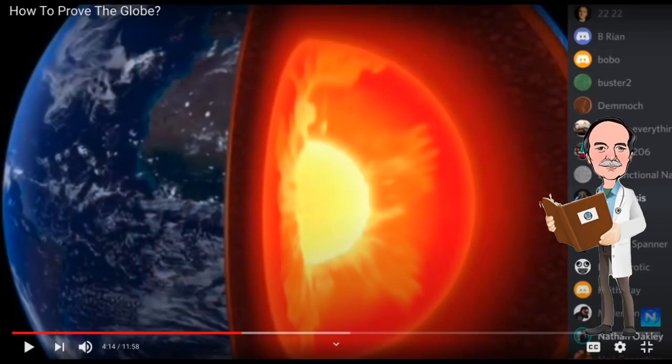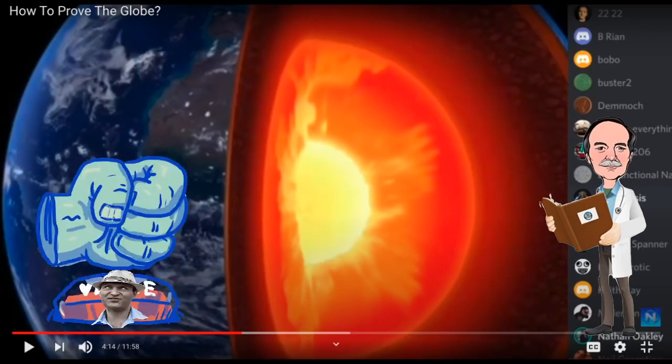Now this goes right along with Nathan's strategy and that is do not make a claim that is subject to attack. So what Arwen is saying is that back when the disc earthers were trying to maintain that the sun was small and local and revolving around near the surface of that disc, that could be attacked with facts. So Nathan is switching over to, we don't know what the sun is. We don't know what the shape of the earth is. We don't know what we're seeing when we look at the sun. Therefore, who knows what the angular size would be because we can't even measure that.